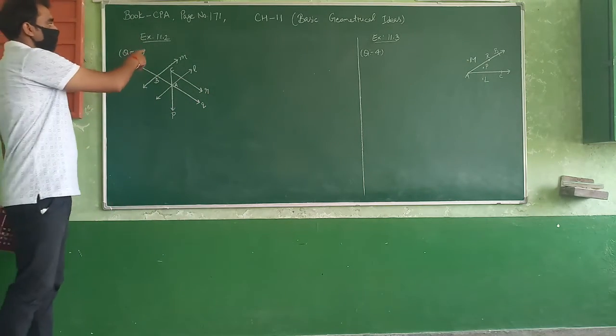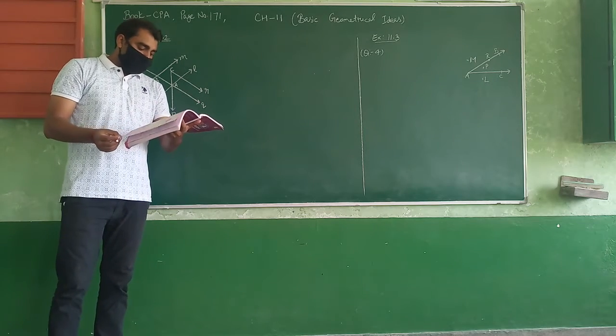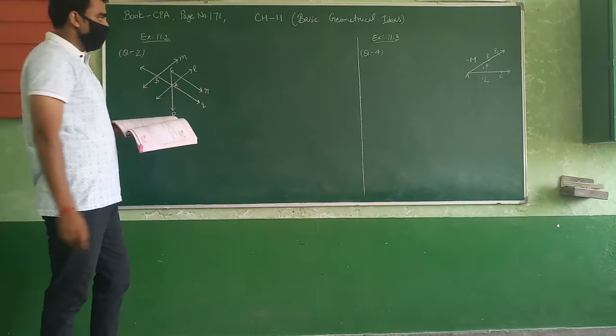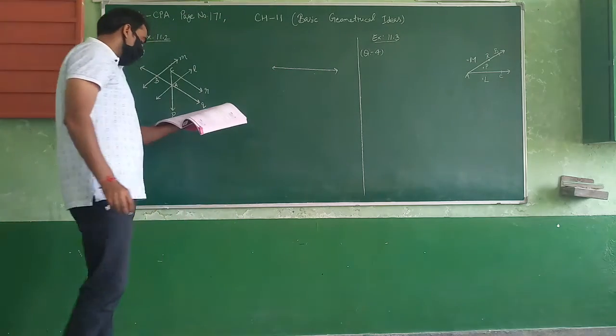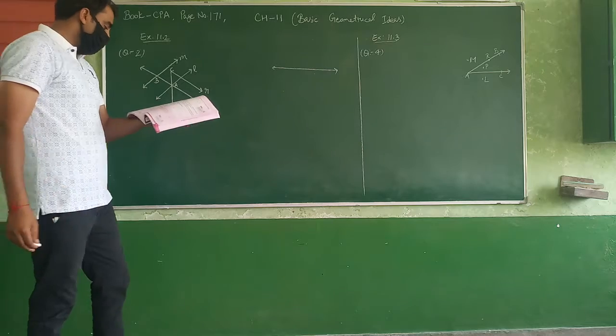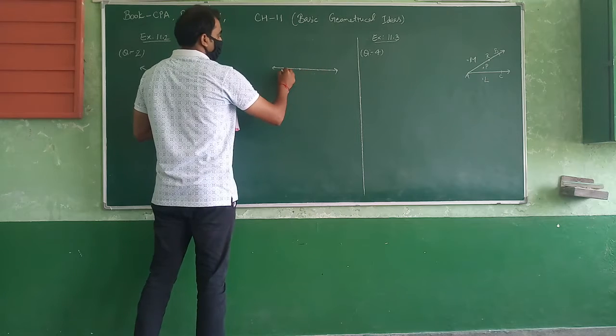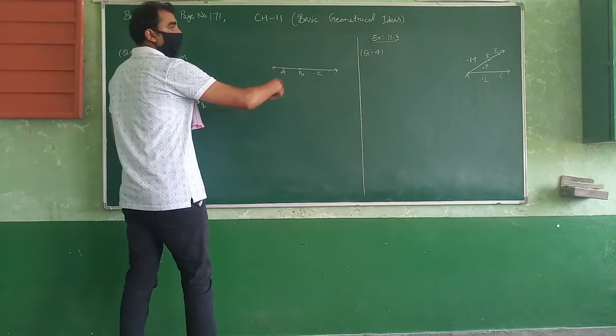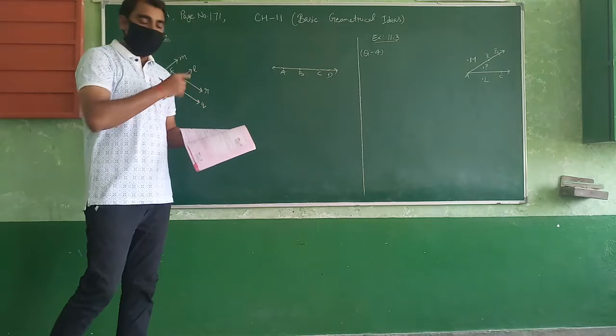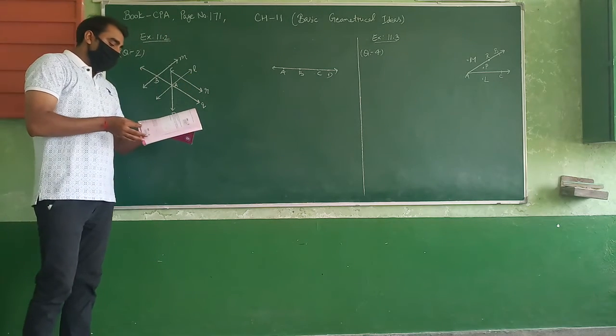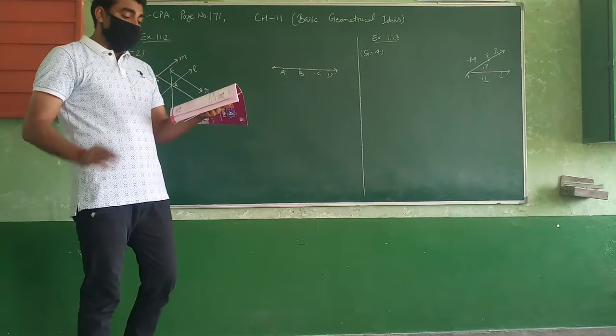Now Exercise 11.2. Before I start the exercise, I want to tell you some properties of collinear points. What are collinear points? Suppose this is a line. If 3 or more points lie on the same line - suppose 3 points, 1, 2, 3, A, B, C - if 3 or more points lie on the same line, then they belong to collinear points.